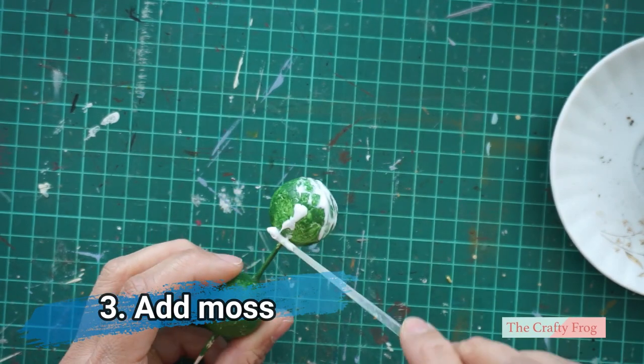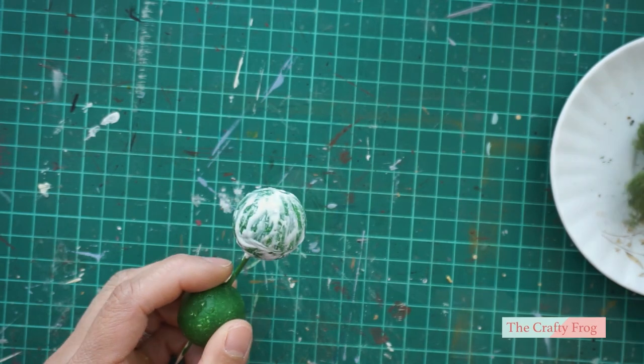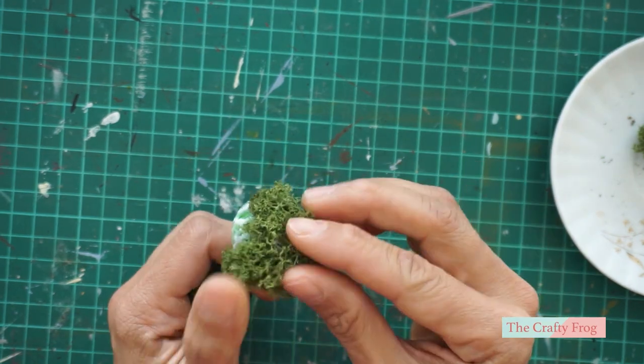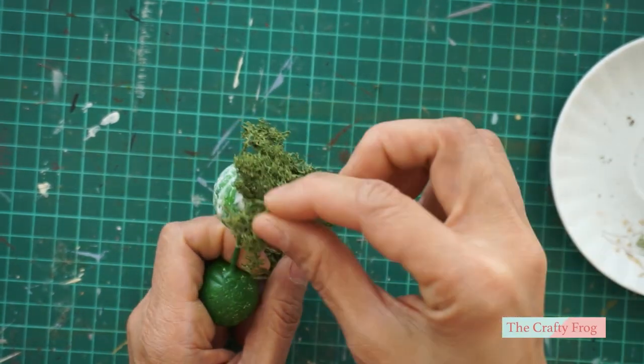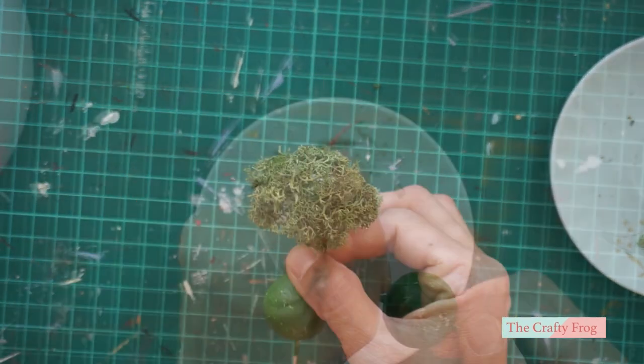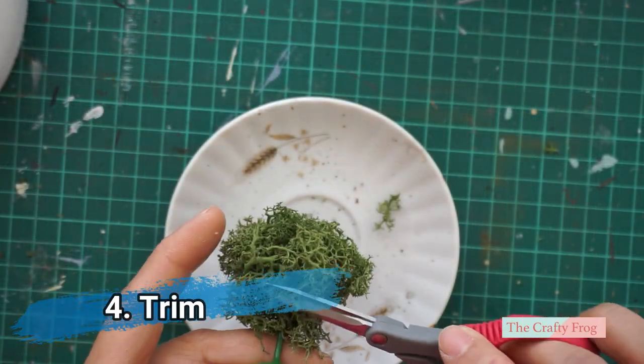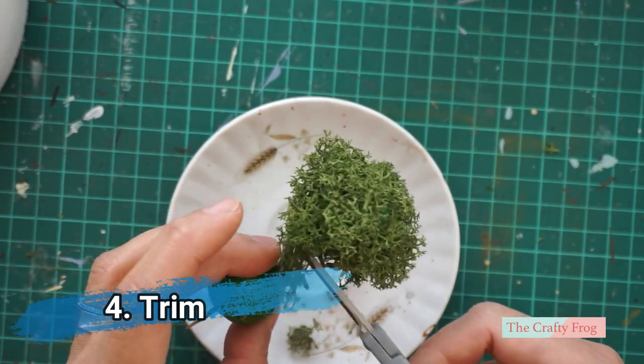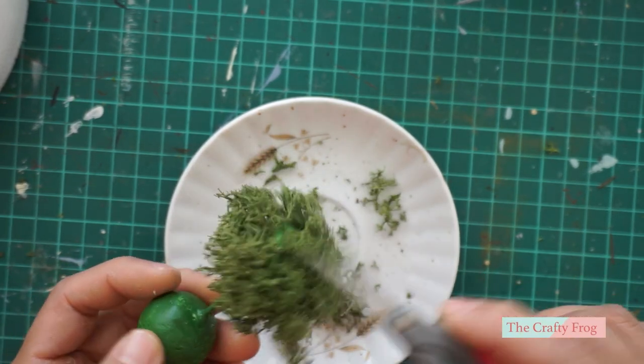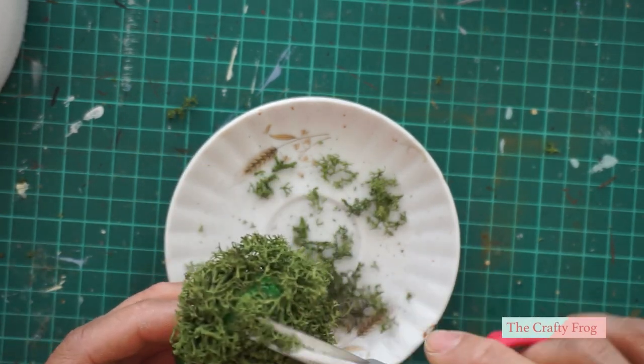Apply glue to the green styrofoam and then add the moss. Don't worry if it's not round yet, just fill the styrofoam with moss. Using a pair of scissors, trim the moss to make it rounder and even. Don't worry if you see any bald area, you can simply add more moss on it and then do the same steps on the second ball.